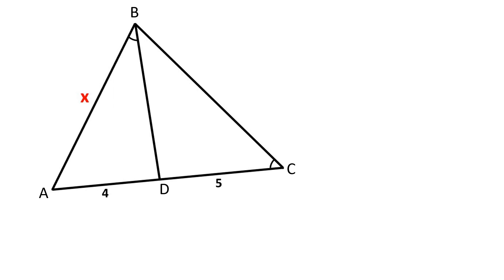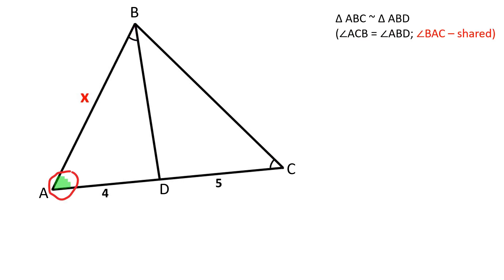Let's solve this problem. Triangles ABC and ABD are similar because two pairs of corresponding angles are equal. Angle ACB is equal to angle ABD, and angle BAC is shared by both triangles.